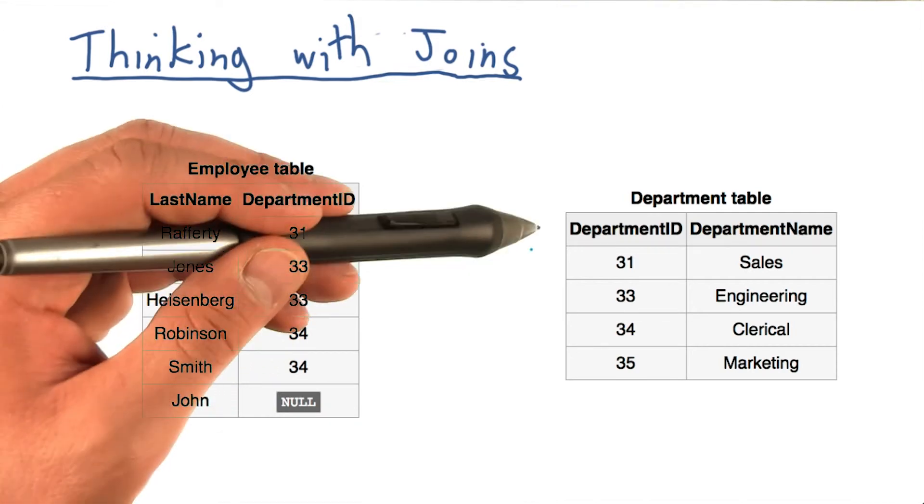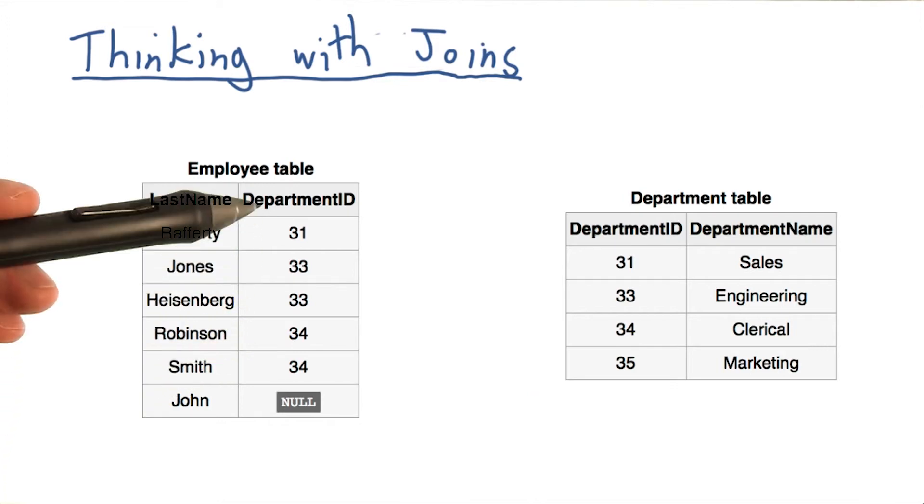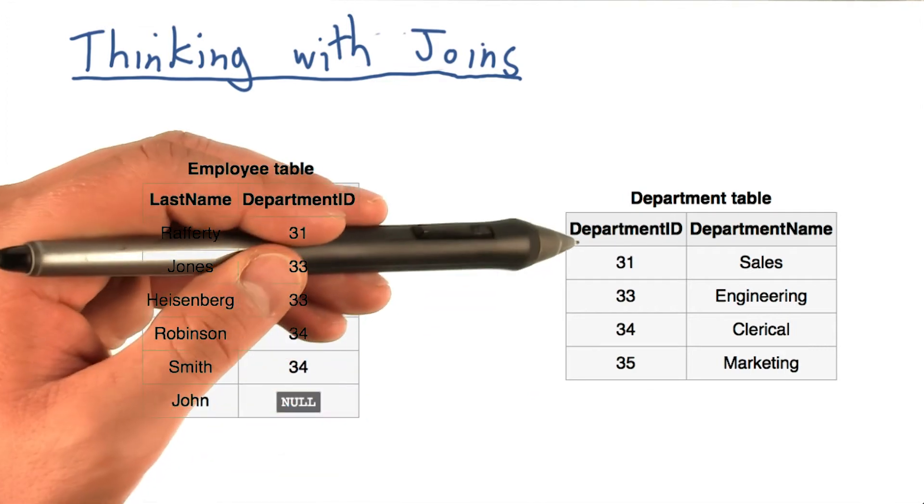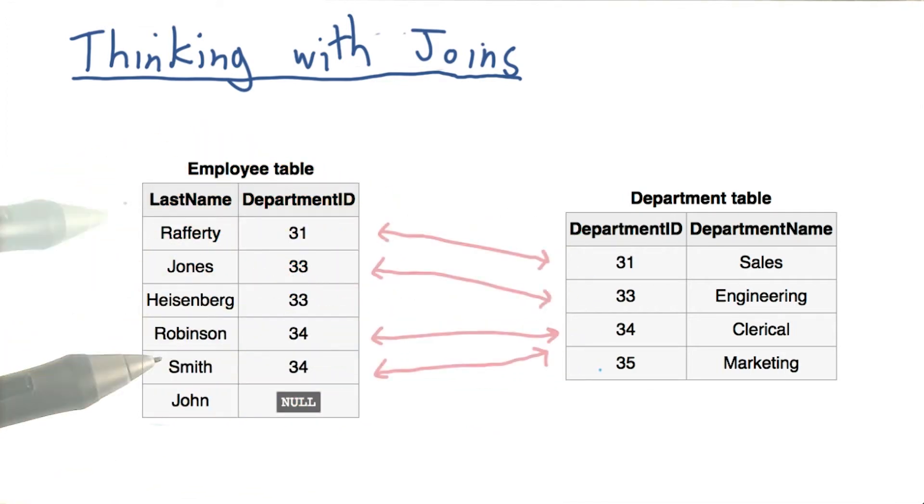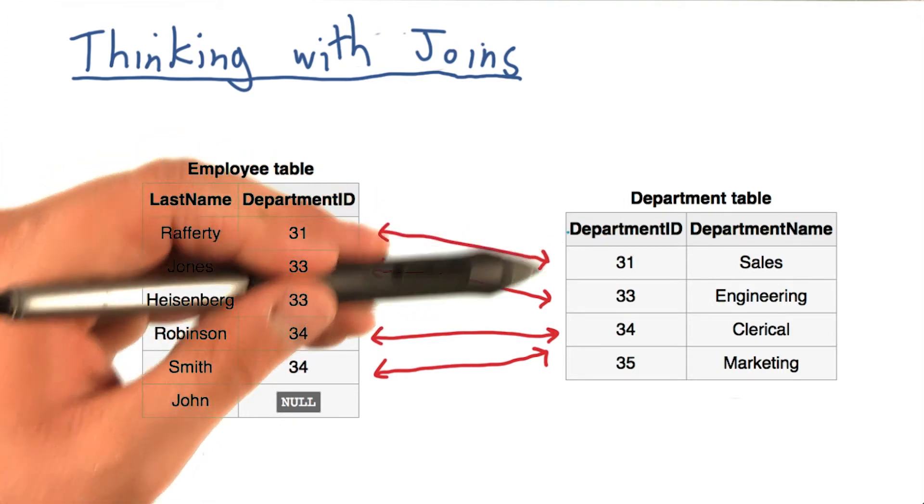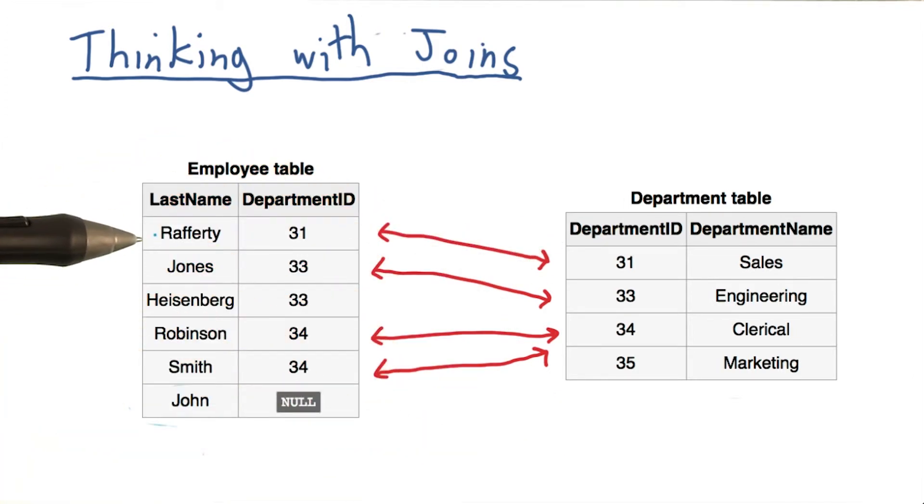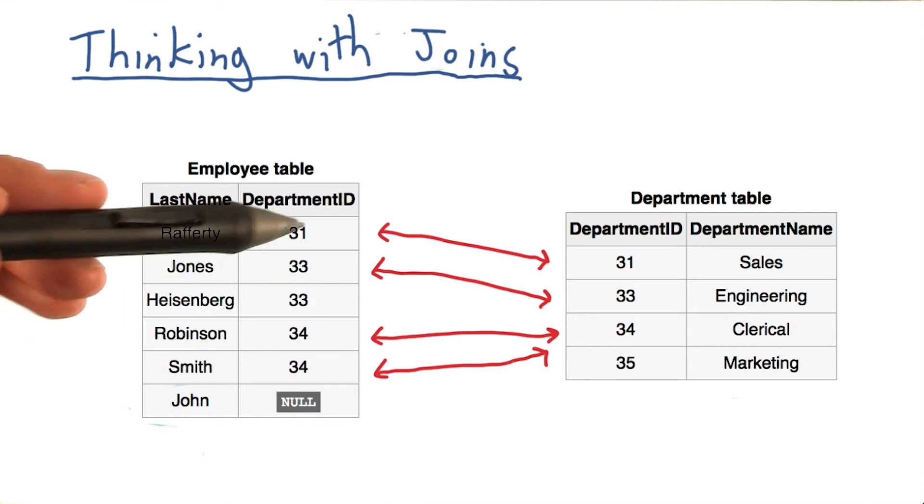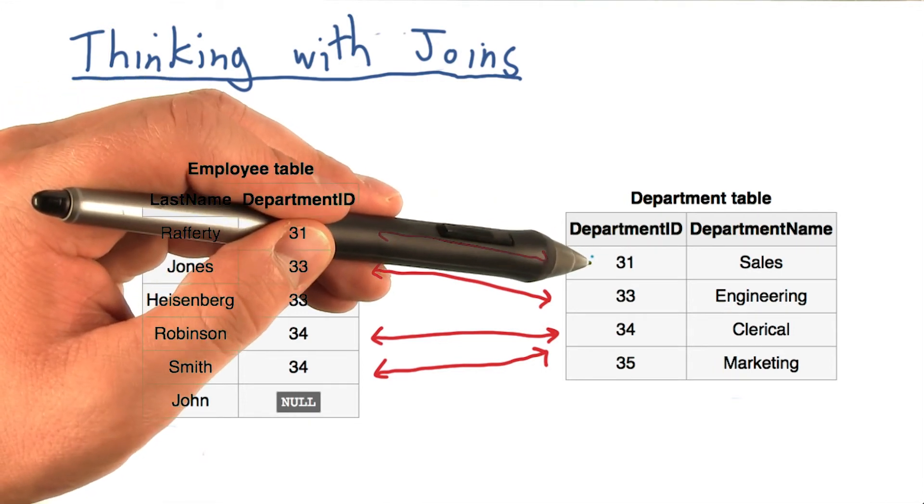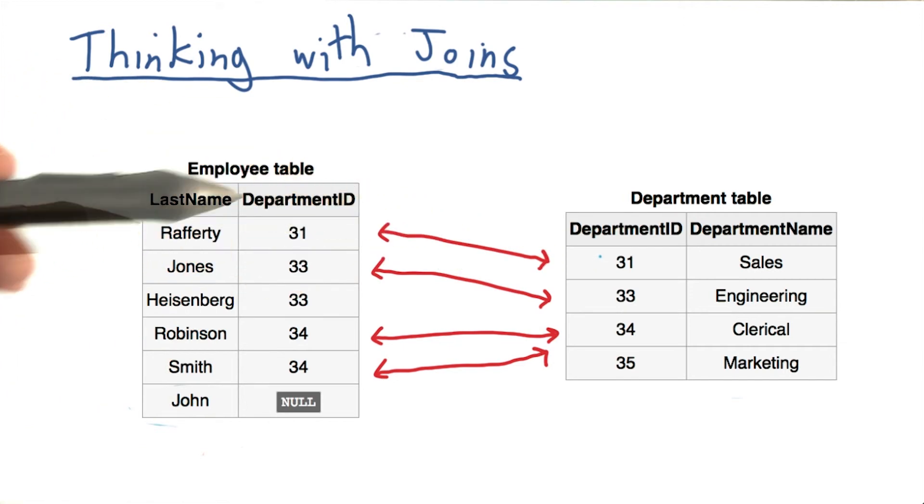Now, the most natural way to join these tables might be on the common column, in this case, department ID, that they both have. So to join these two tables, we would simply go down each row in the first, and for that department ID, match it to the equivalent department ID in the department table. And we would do the same for every row.